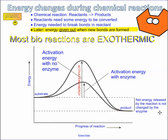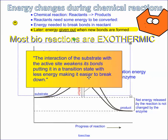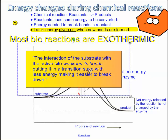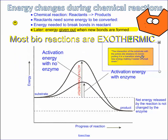Here's the net energy released by the reaction. Notice that in a regular reaction with no enzyme, here's the energy level at the end; and with the enzyme present, here's the energy level at the end. The end result — the amount of energy that's actually released — doesn't change. The enzyme is only reducing the activation energy, the energy required to get over this initial hump. The interaction of the substrate with the active site weakens its bonds, forming a temporary enzyme-substrate complex in a transition state with less energy, making it easier to break down.